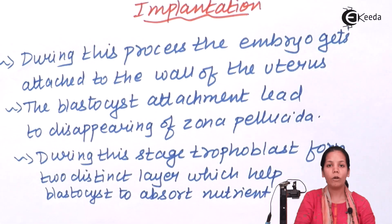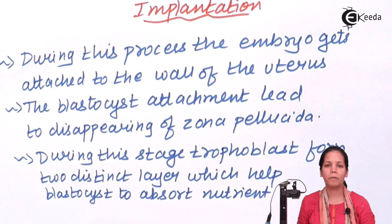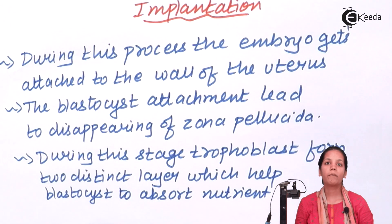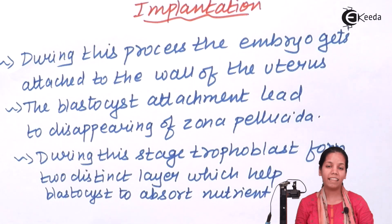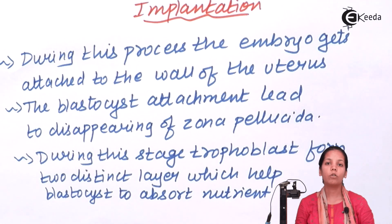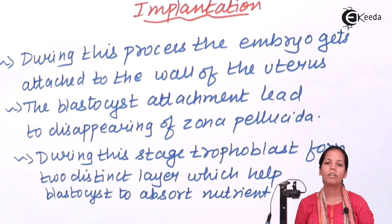Once implantation has been done, the embryo will start growing after attachment to the wall of the uterus. It will cover approximately a period of eight to nine months, and then the child will be born once the uterus region expands and the child is delivered in the delivery process.